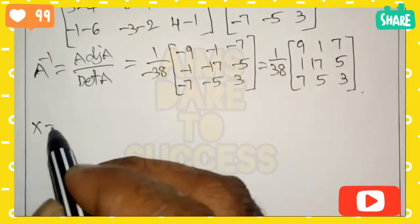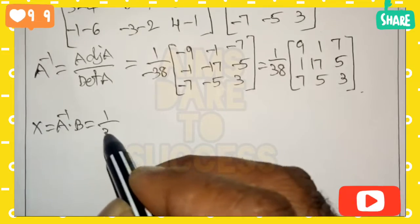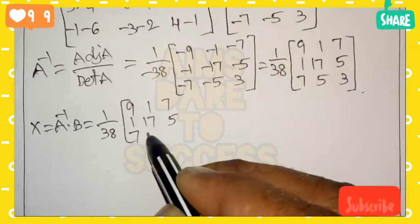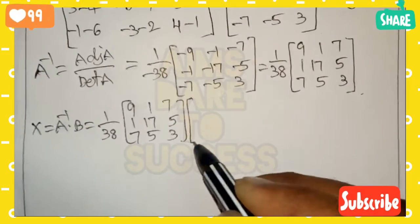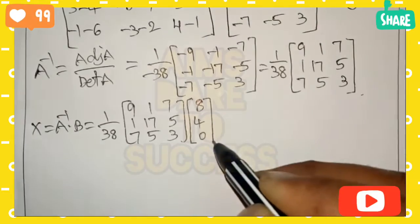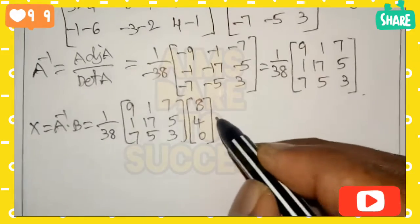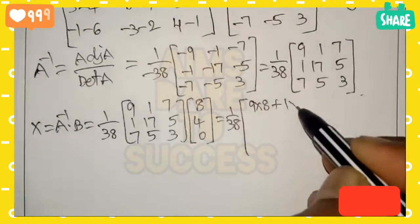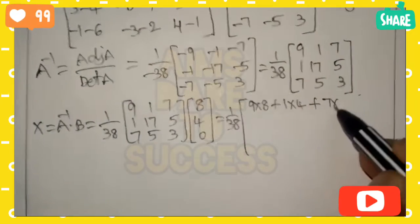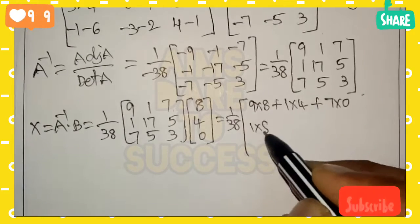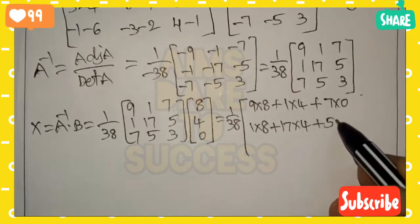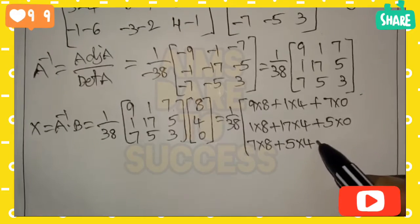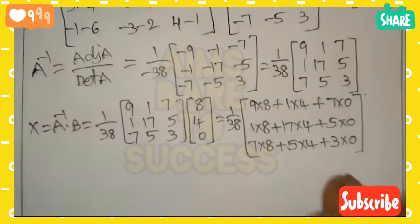Now X equals A inverse times B. A inverse is [9, 1, 7; 1, 17, 5; 7, 5, minus 3] and B is the column vector [8; 4; 0] from the constant values on the right side of the 3 equations. Multiplying row by column: row 1 gives 9×8 plus 1×4 plus 7×0; row 2 gives 1×8 plus 17×4 plus 5×0; row 3 gives 7×8 plus 5×4 plus (minus 3)×0. Since minus 3 times 0 is 0, no problem.